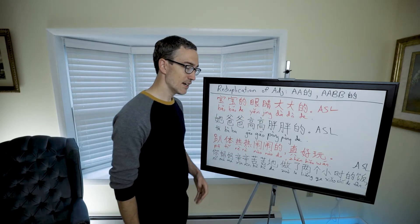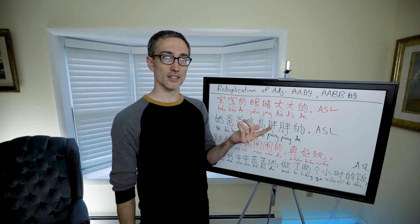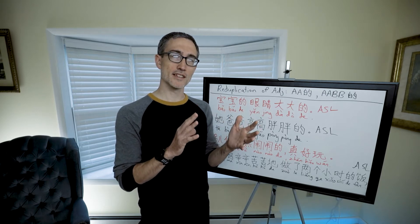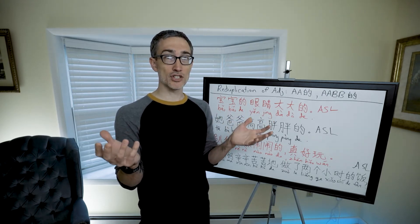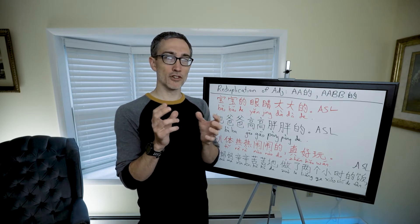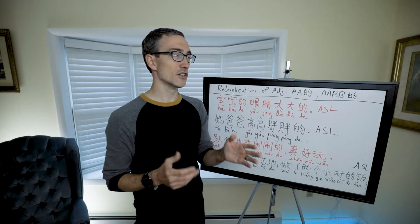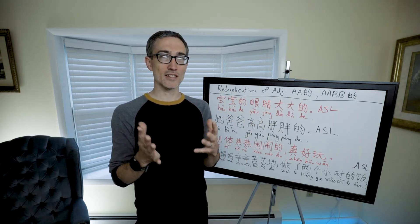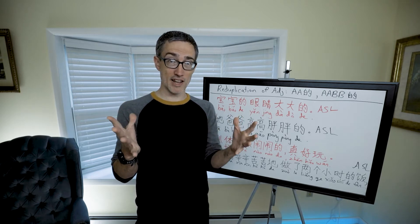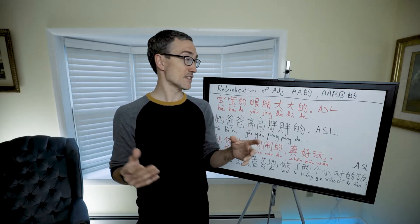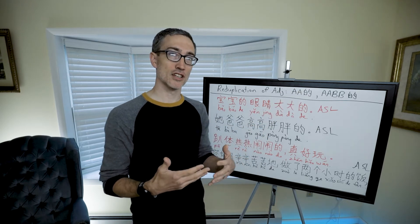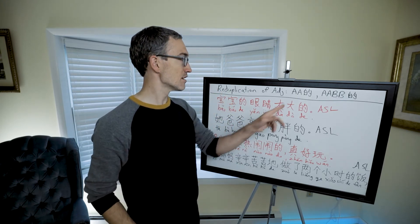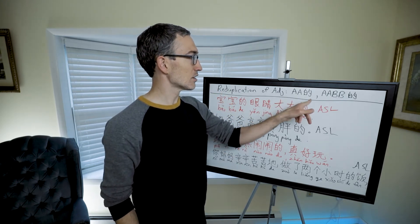If I say 'he's so tall tall tall,' grammar-wise it's the same as saying 'tā hěn gāo' — it just makes it more descriptive. There's no need for the adjective-marking 'de' in 'tā hěn gāo.' The 'de' here is part of this phrase to make it sound more descriptive. It's like an exclamation point — it enhances the descriptiveness. So it's 'gāo gāo de.'